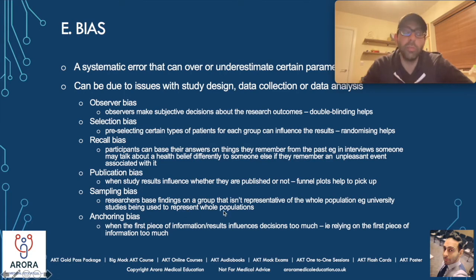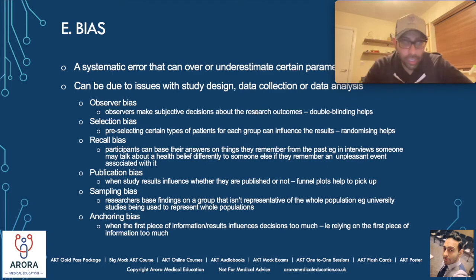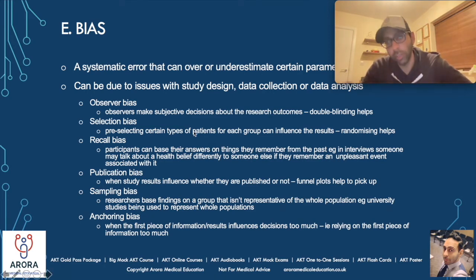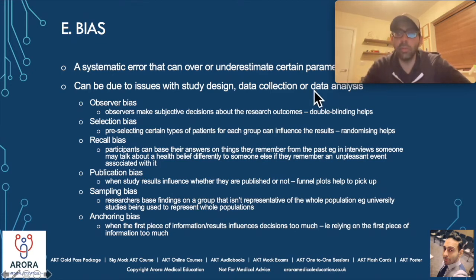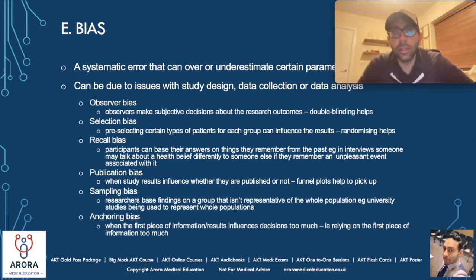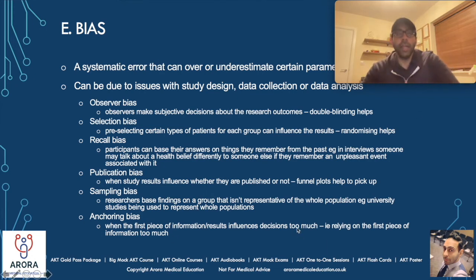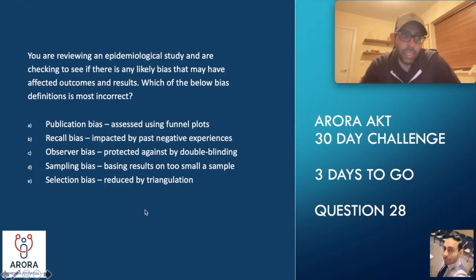There are loads of different biases and they can all lead you to under- or over-estimating certain parameters in a study, which reduces its impact. The more biases you have, the harder it is to draw strong conclusions. The more you've done to reduce bias — for example, double-blinding, randomization, checking things later on — the more you increase the strength of that study. Biases are something I used to really struggle with when preparing for my AKT, but hopefully breaking them down this way helps. Option E is the only correct answer because it's the most incorrect statement.